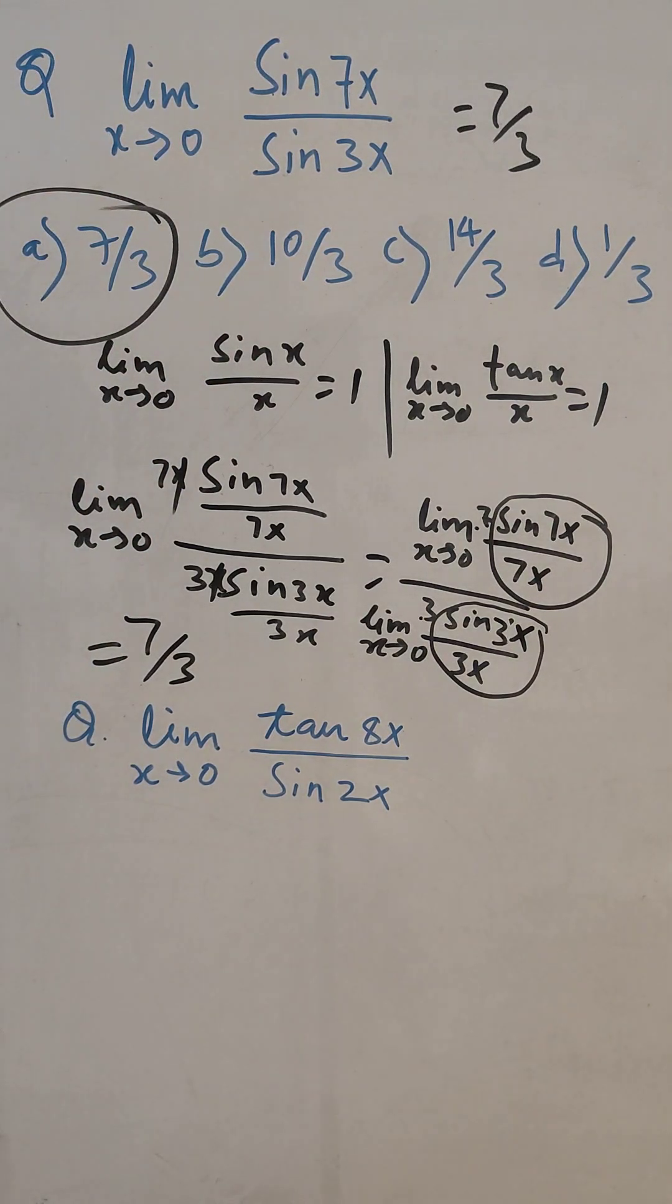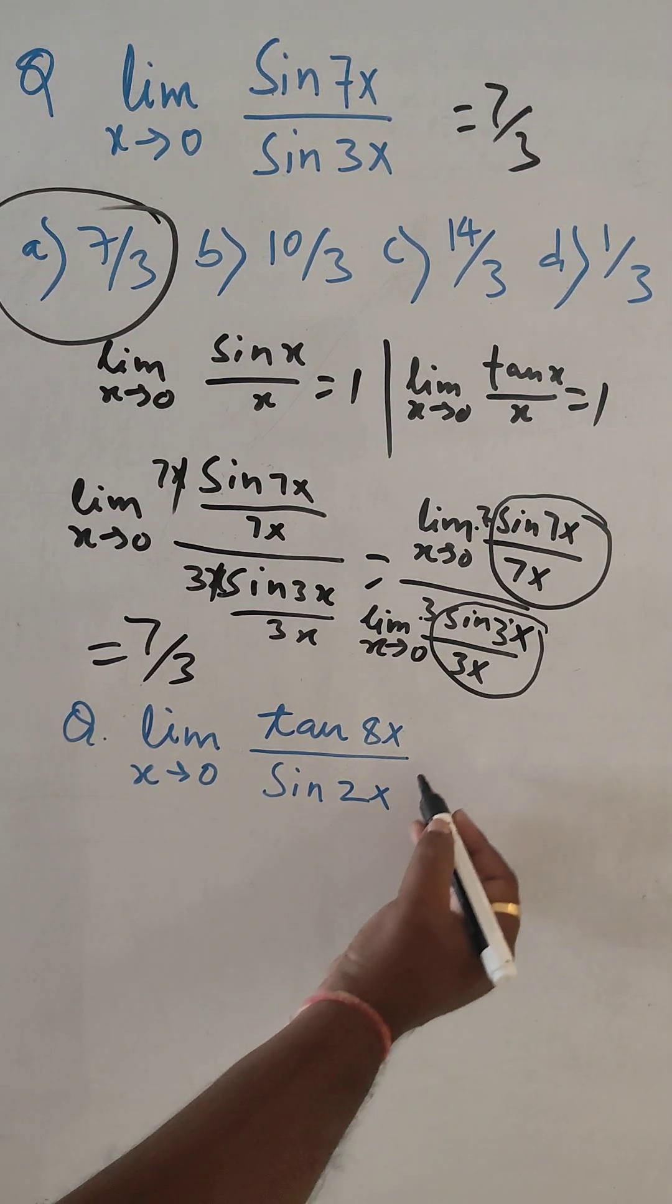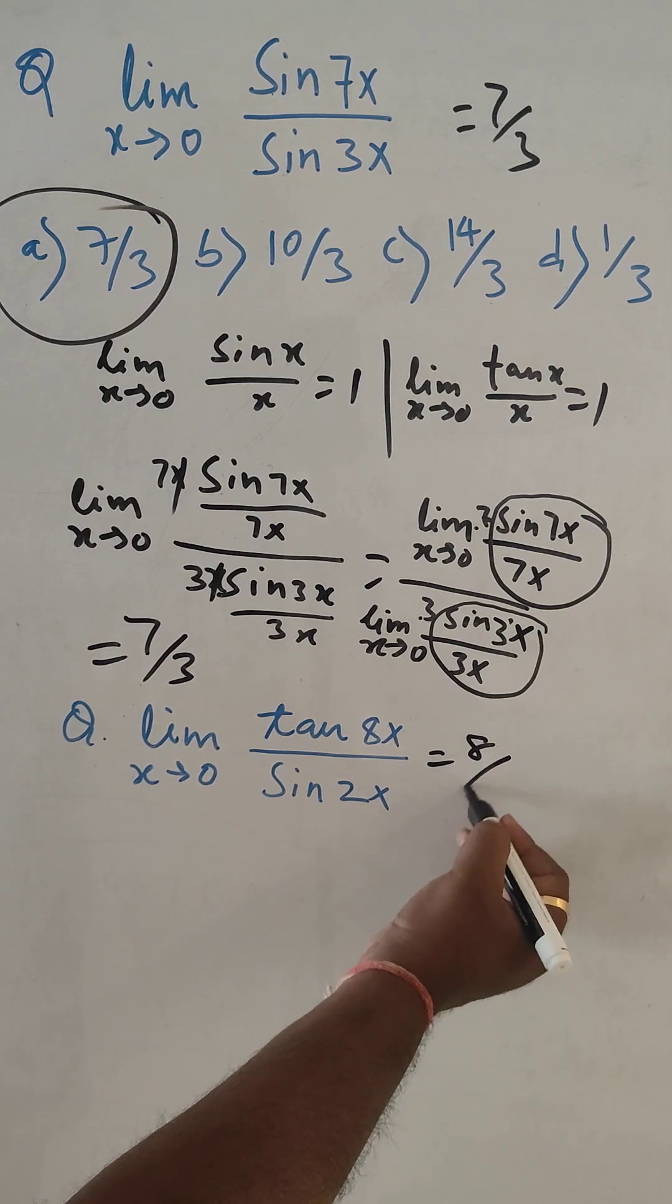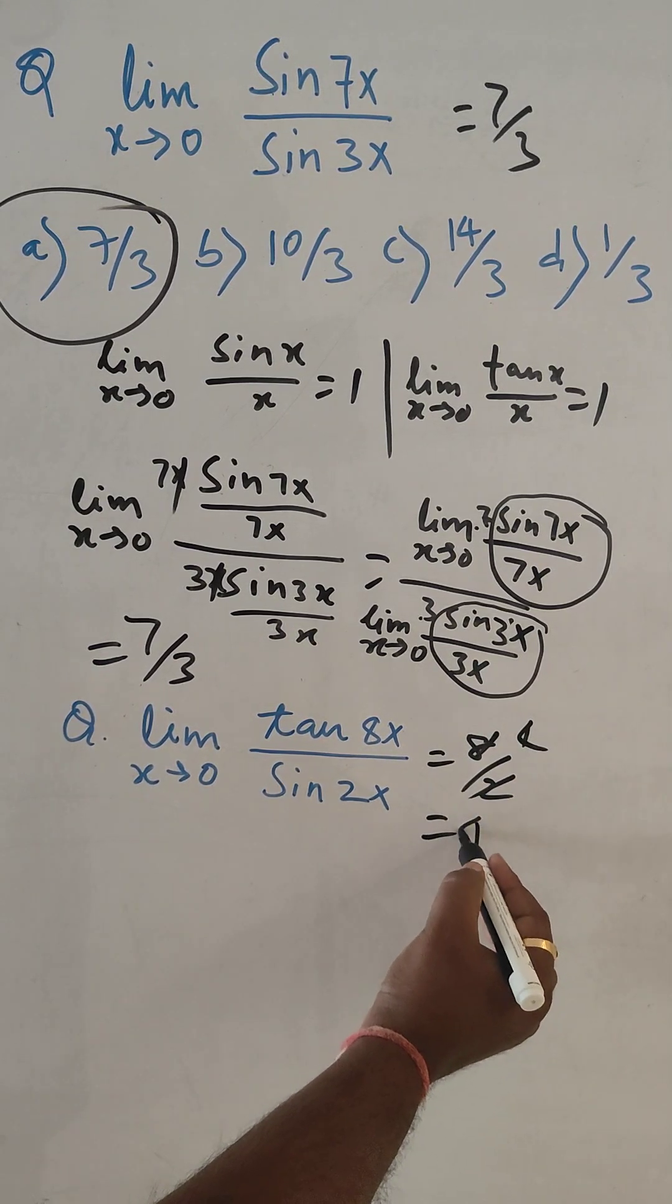So this portion can come into competitive exam. So directly if you know the formula you can write. So here also, if you know the formula what can be the value? The value can be 8 by 2. So answer is 4.